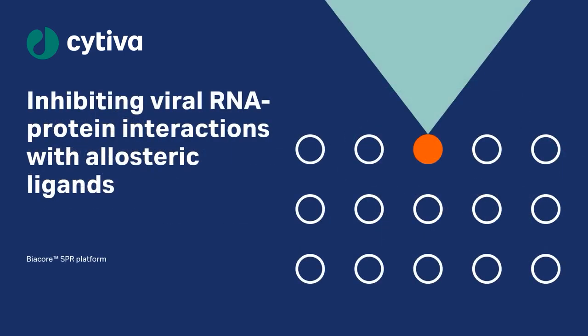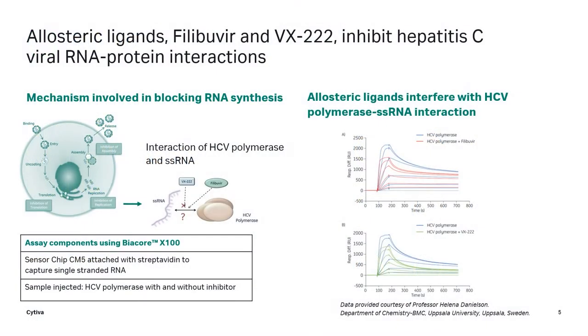Biological processes are real-time events, driven and regulated by dynamic interactions between key molecules. We will start with one example outlining inhibition of viral RNA-protein interactions with allosteric ligands. Several ways of treating hepatitis C virus infections are currently explored, targeting different steps in the virus lifecycle.